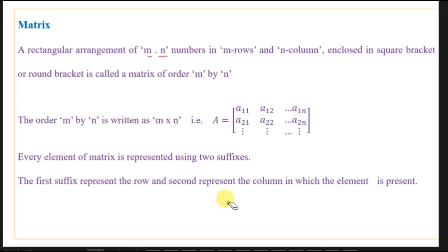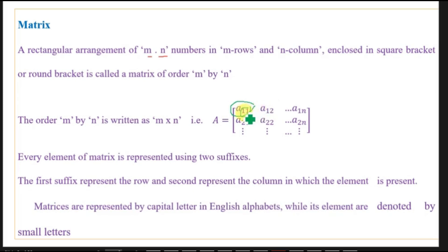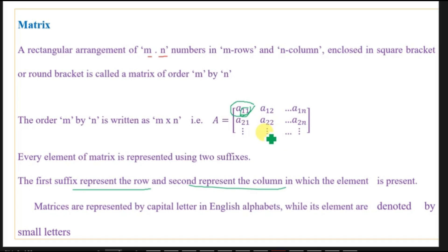Every element of the matrix is represented using two suffixes. These suffixes represent the position of the element in the matrix. The first suffix denotes the row, and the second suffix represents the column in which the element is present. Generally, matrices are represented by capital letters in the English alphabet, while the elements of the matrix are denoted by small letters.